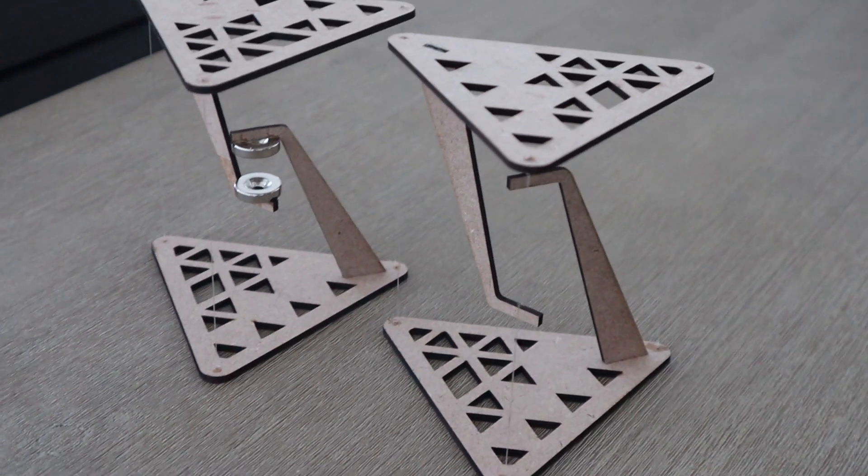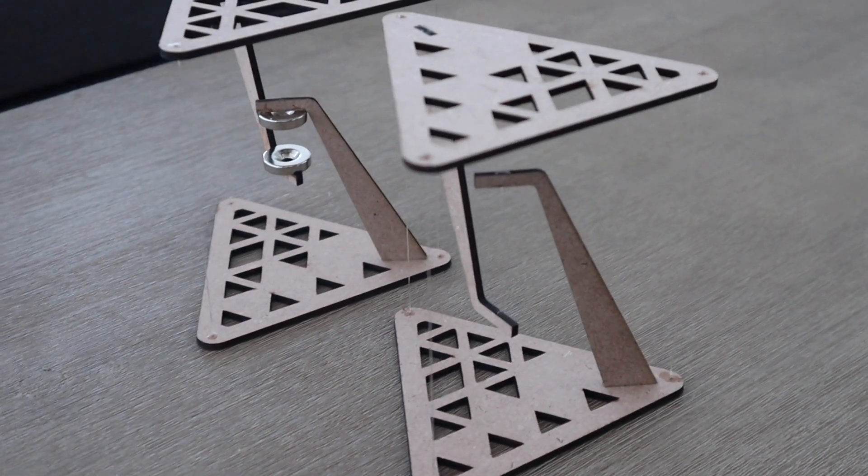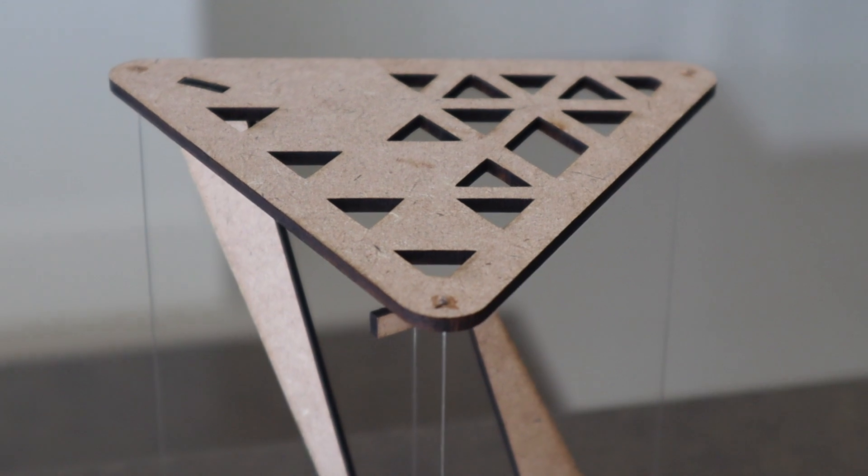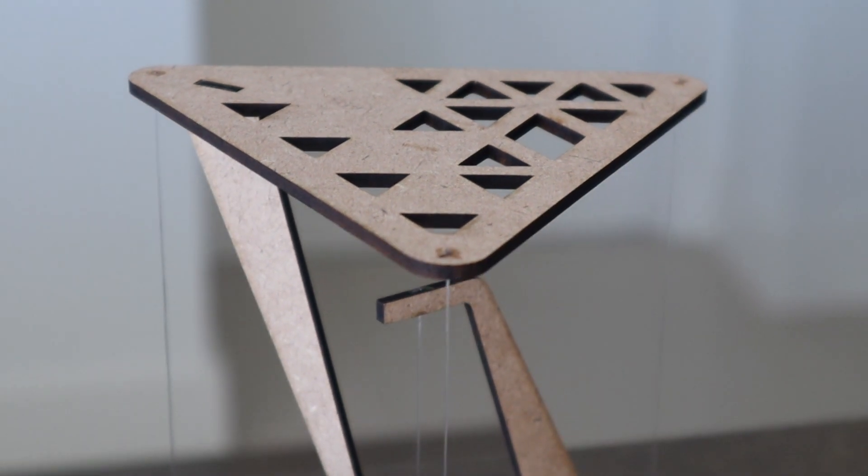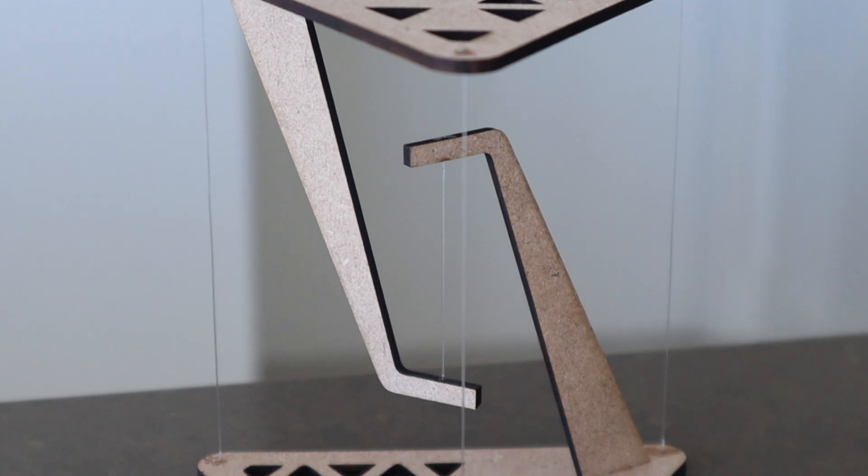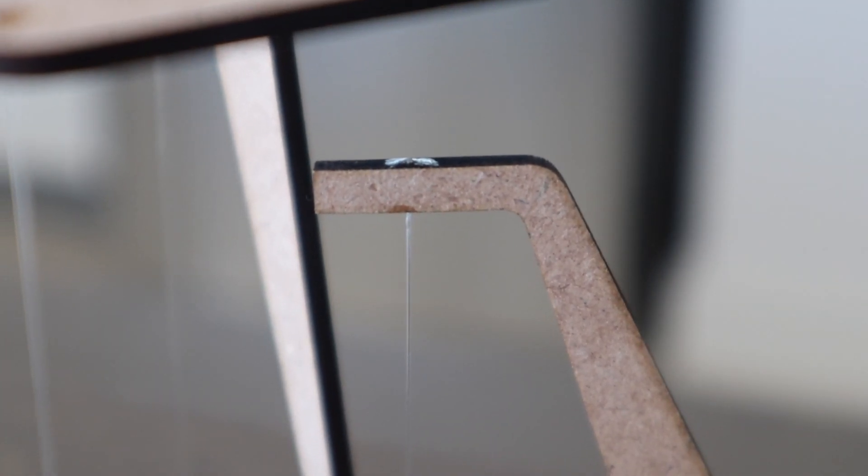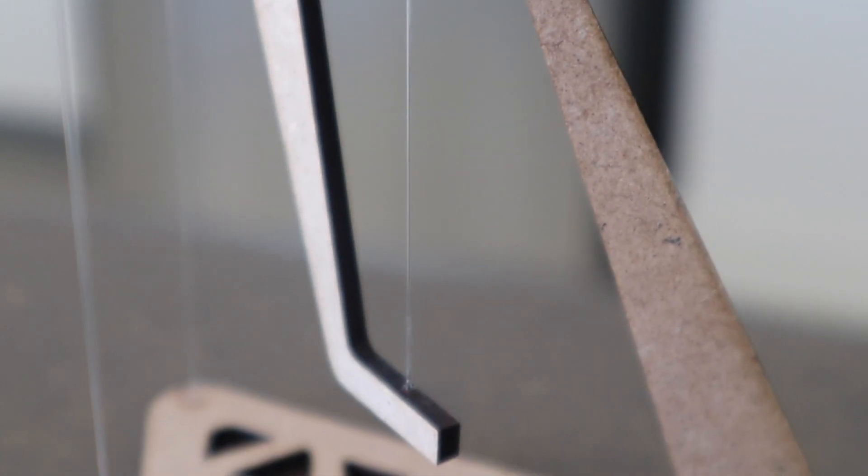The world's largest tensegrity structure is currently the Kurilpa Bridge in Brisbane, Australia. When you first look at it, it appears that the top surface has been supported by the three outside pieces of fishing line. But taking a closer look, you'll see that the line doing all of the work is actually the one in the centre.